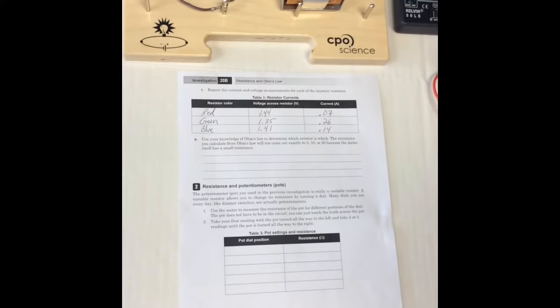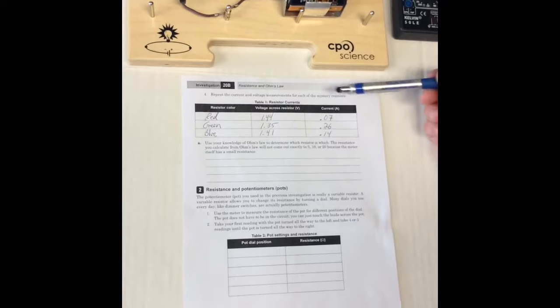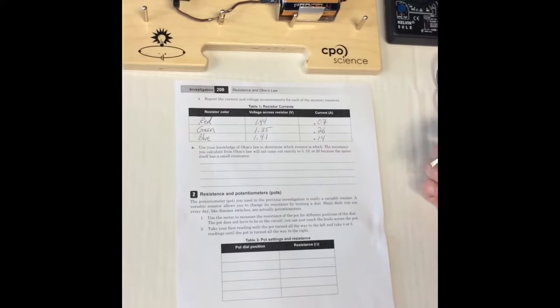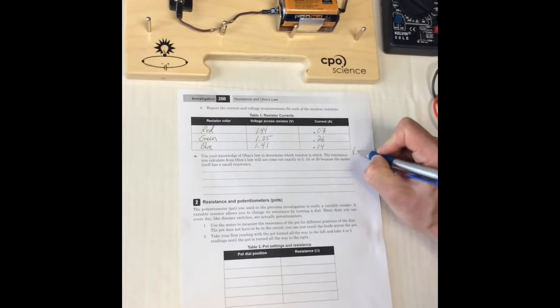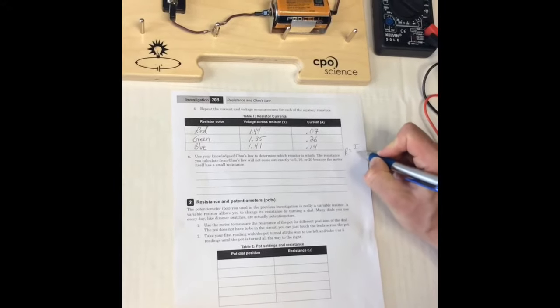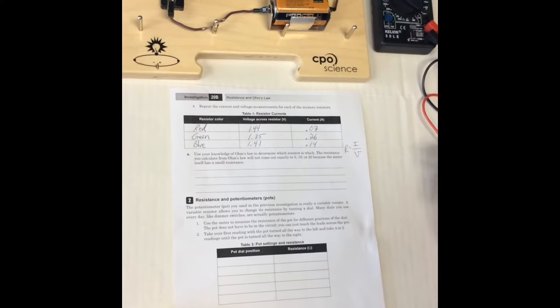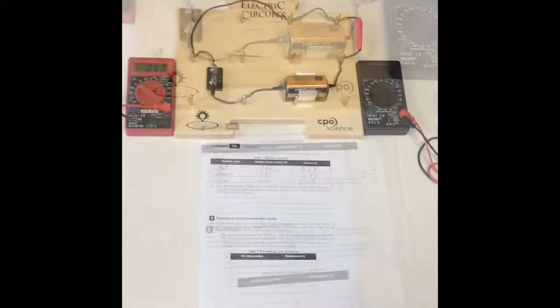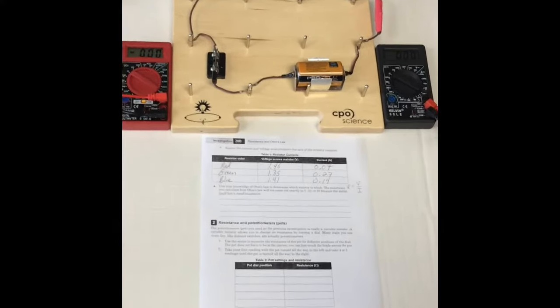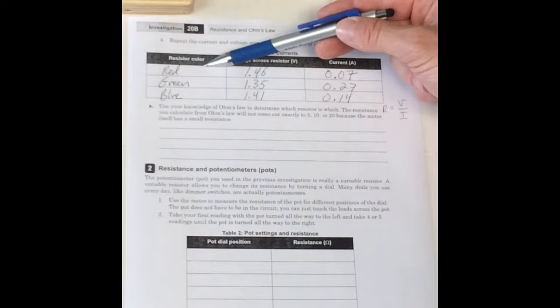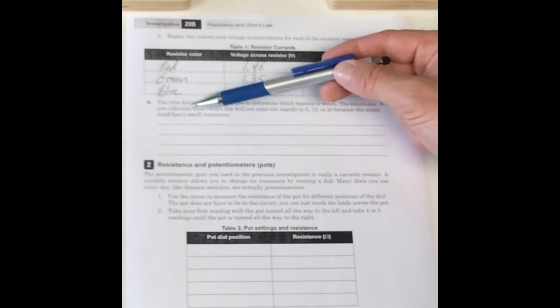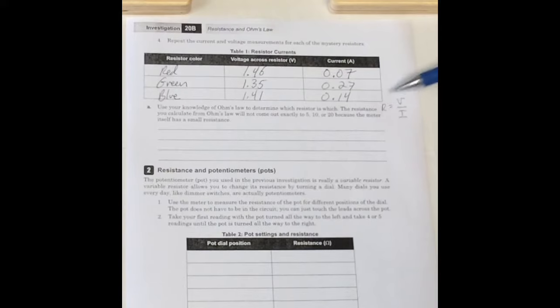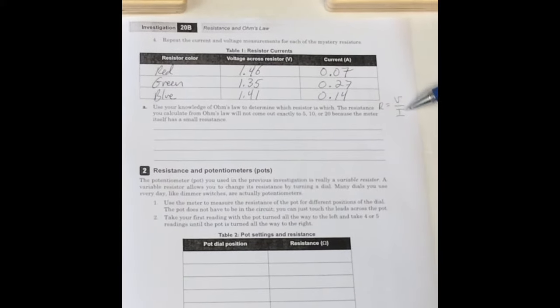What we've done is we've gone ahead and measured our voltages and currents across the green and the blue. Keep in mind that for us calculating resistance, resistance is current divided by voltage. You will need that for the next step. We've gone ahead. We've already measured the voltage and current for the red resistor. We also did for the green. And we did it for the blue. At this point you're going to be asked to calculate the resistance. Remember to calculate resistance, it's voltage divided by current.